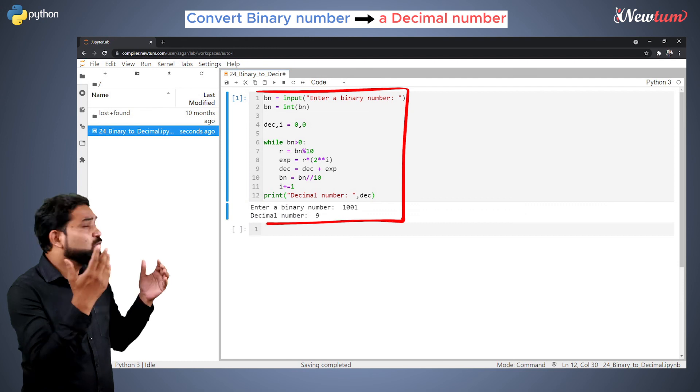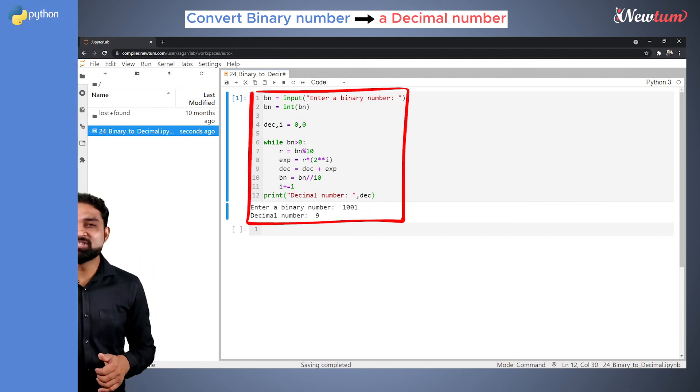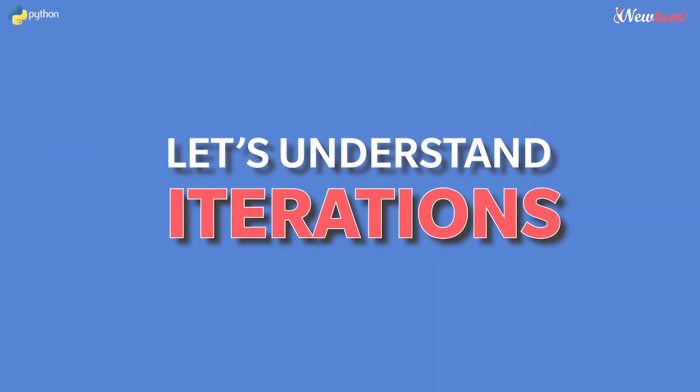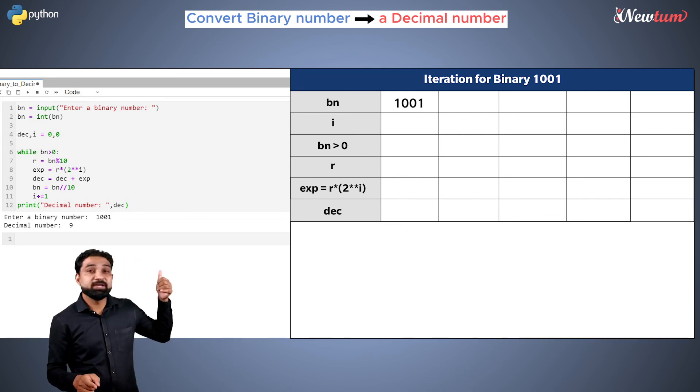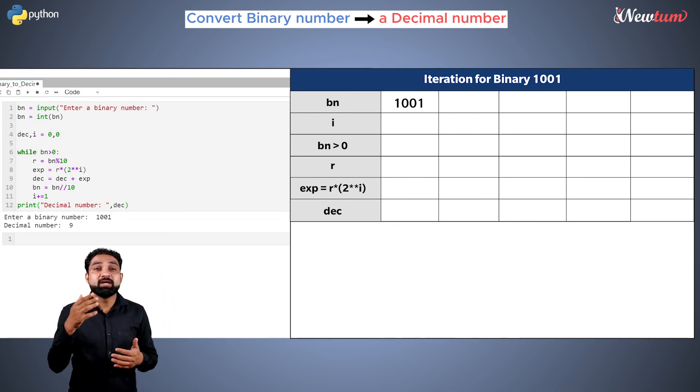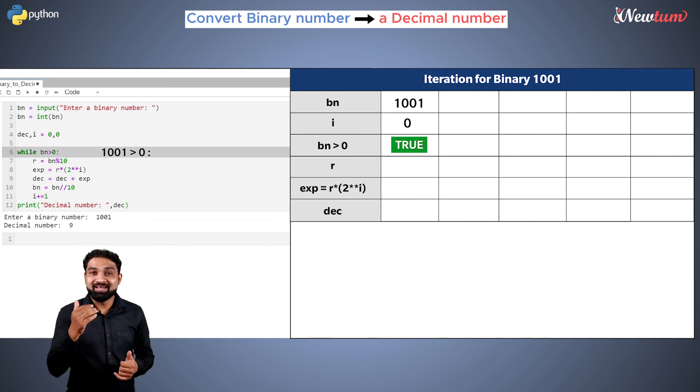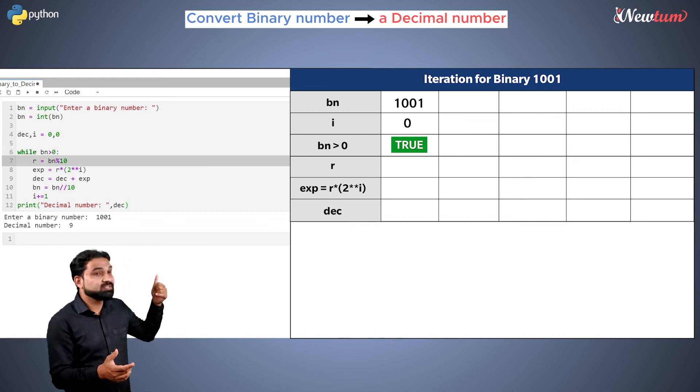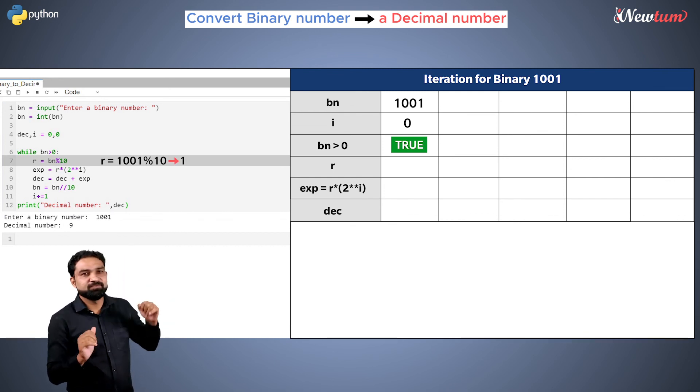But how does this loop or the complete logic work? Let's understand this with the iteration. When you entered 1001, it was stored in the bn variable, and then converted into an integer. Now your loop starts, and the value of bn, that is 1001, is definitely greater than 0. Hence the control goes inside the loop. Here it gets the remainder 1 in the variable r. In our case, it's 1.